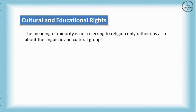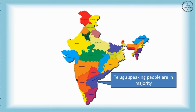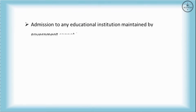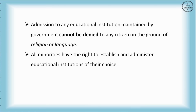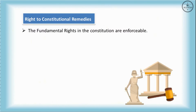Next are Cultural and Educational Rights. The meaning of minority here is not referring to religion only, but also to linguistic and cultural groups. For example, Telugu-speaking people are in majority in Andhra Pradesh while they are in minority in Karnataka. Followers of Sikhism are in majority in Punjab but are in minority in Delhi and Haryana. Admission to any educational institution maintained by the government cannot be denied to any citizen on the grounds of religion or language. All minorities have the right to establish and administer educational institutions of their choice.